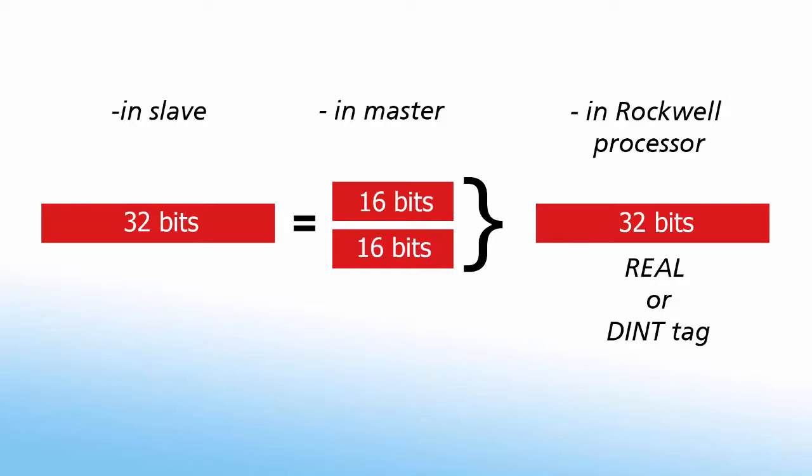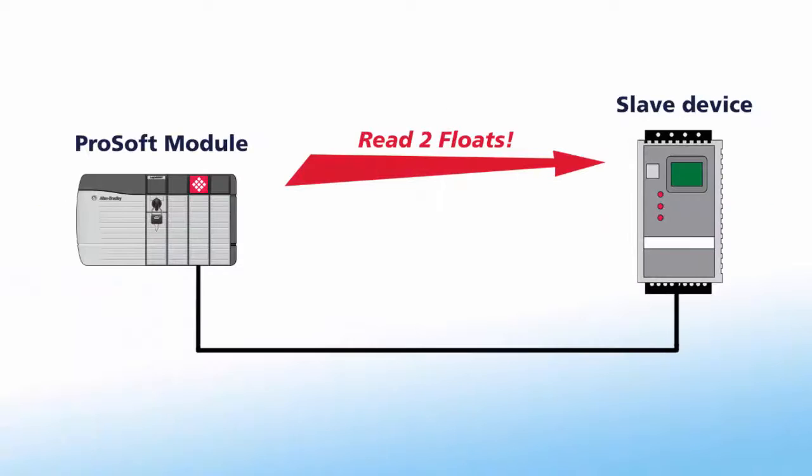Now let's see how a float value is handled in a typical application. The Modbus master will transmit a command to a specific slave to read some values, in this case two 32-bit float values.